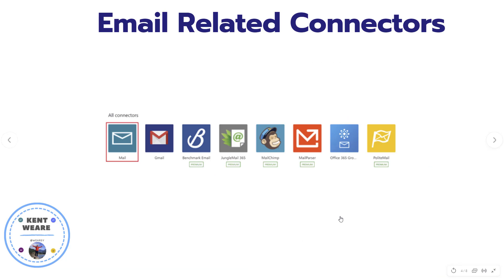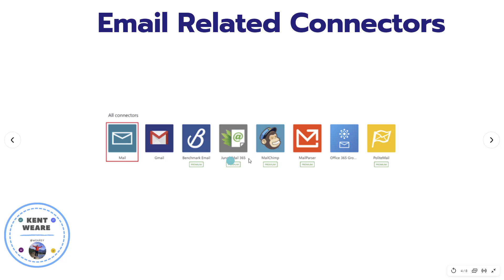So where do I find this so-called mail connector? On the screen, I've gone into the Power Automate portal and searched for 'mail' in the connectors. Sure enough, we find this connector — it is called just 'Mail.' This is the connector we're talking about here, not to be confused with any of the other email-related connectors.